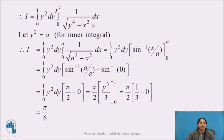To solve this inner integral, let us assign y² equals to a constant A. Therefore we can write it as integration from 0 to 1, y² dy, and for the inner integral with limits 0 to A, we write integration of 1 upon under root of (A² minus x²) dx. We know that the integration of 1 upon under root of (a² minus x²) is sine inverse of x upon A, so this integral becomes integration from 0 to 1, y² dy, times sine inverse of x upon A with limits 0 to A.